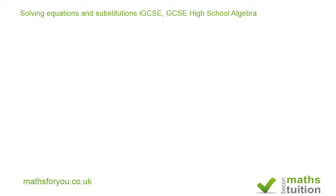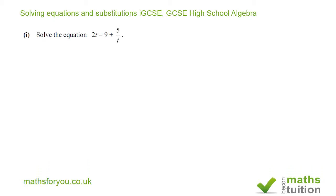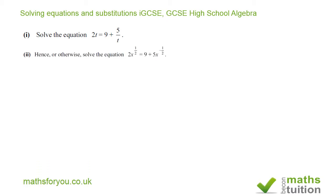The first part says: solve the equation 2t is equal to 9 plus 5 over t. Part two says: hence or otherwise solve the equation 2 times x to the power of a half is equal to 9 plus 5x to the power of a half.